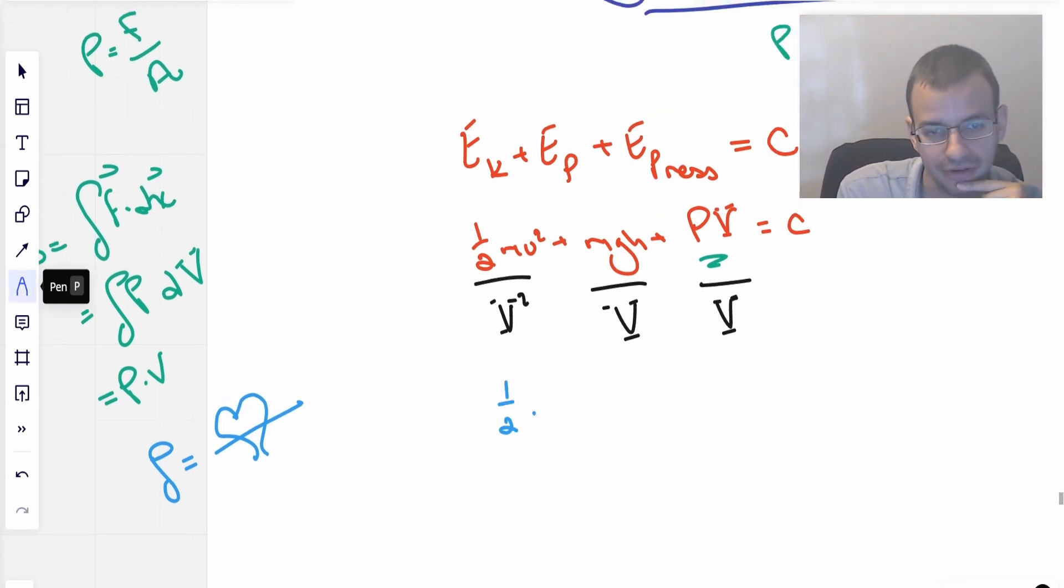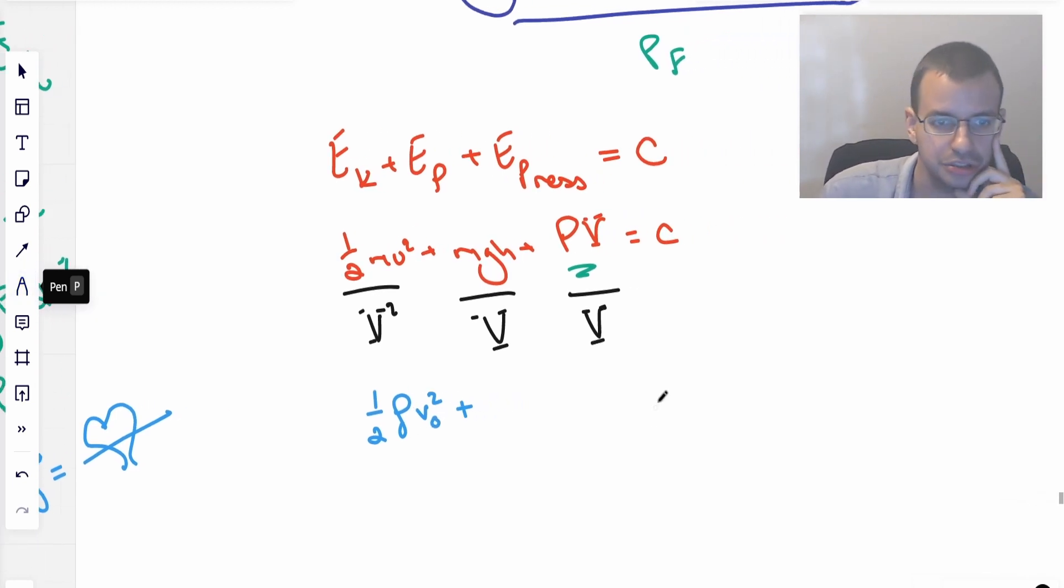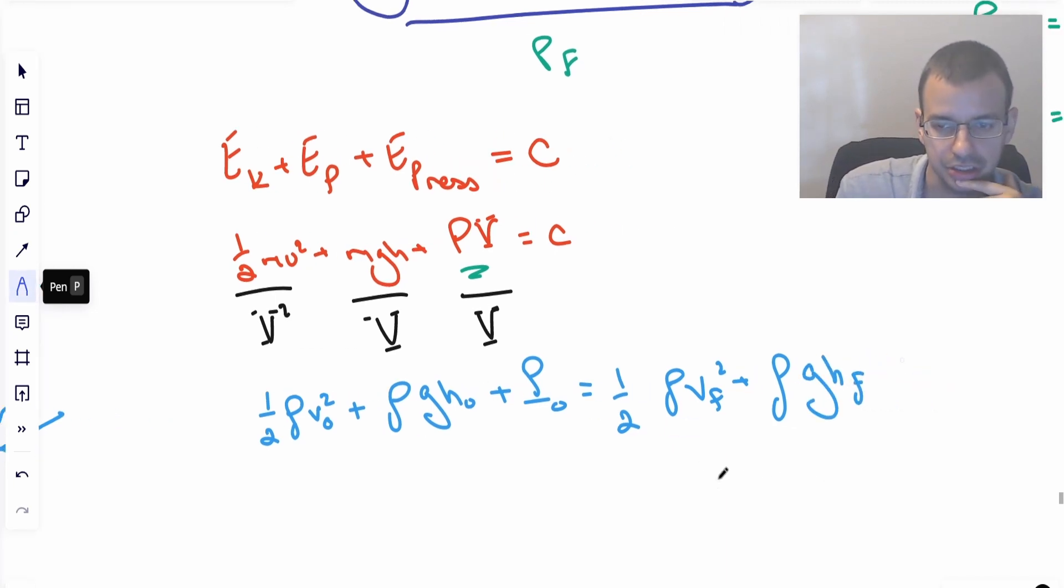So this is the same as one half rho velocity squared. And I'm going to call this initial, because I'm going to use this equation. Rho gravity times height initial plus pressure initial equals one half rho velocity final squared plus rho g height final plus pressure final.